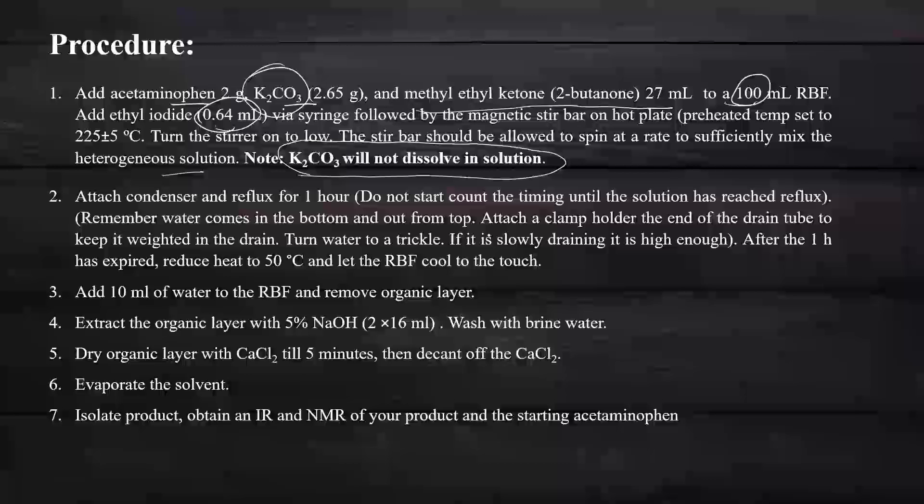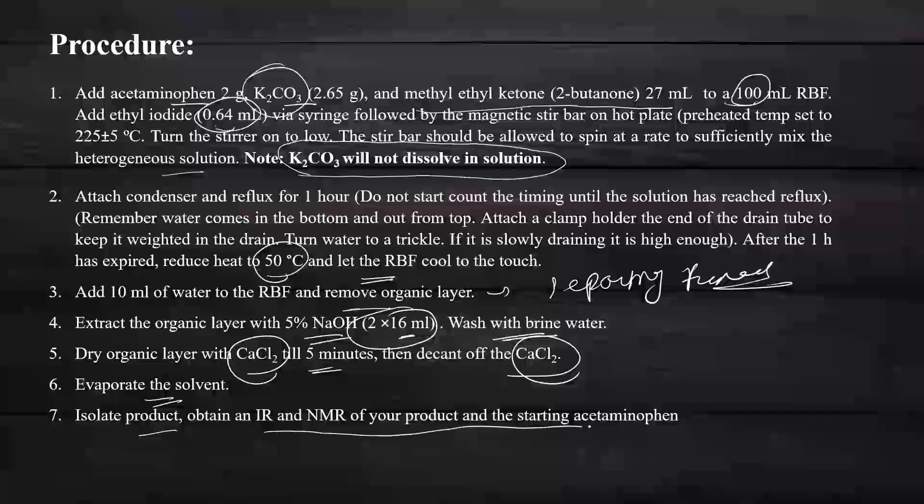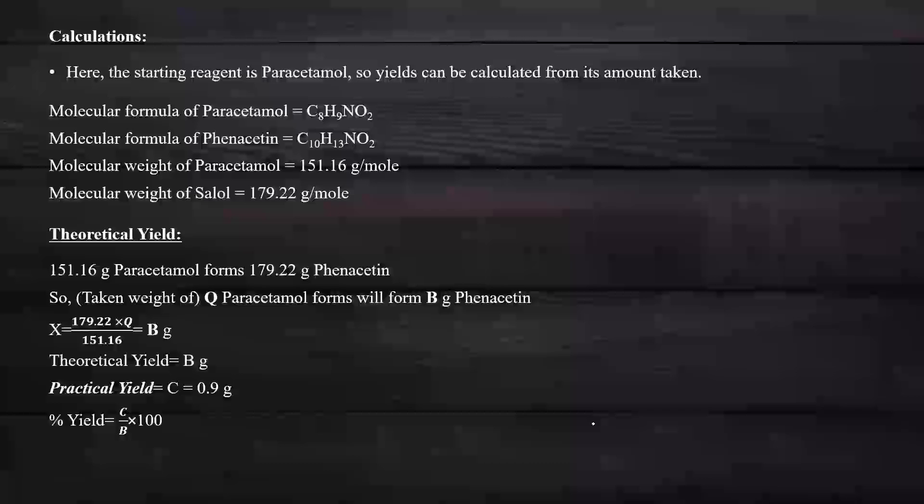Attach the condenser and reflux for one hour. After one hour is finished, reduce the heat to 50 degrees and let the RBF cool to the touch. Then add 10 ml of water into the RBF. Using a separating funnel, try to get back the organic layer. Extract the organic layer with 5% aqueous NaOH. Add 2 times 16 ml of water. Wash again with brine. Dry the organic layer with CaCl2 for 5 minutes, then decant the CaCl2. Evaporate the solvent, isolate the product, and obtain IR and NMR for the product and starting acetaminophen.